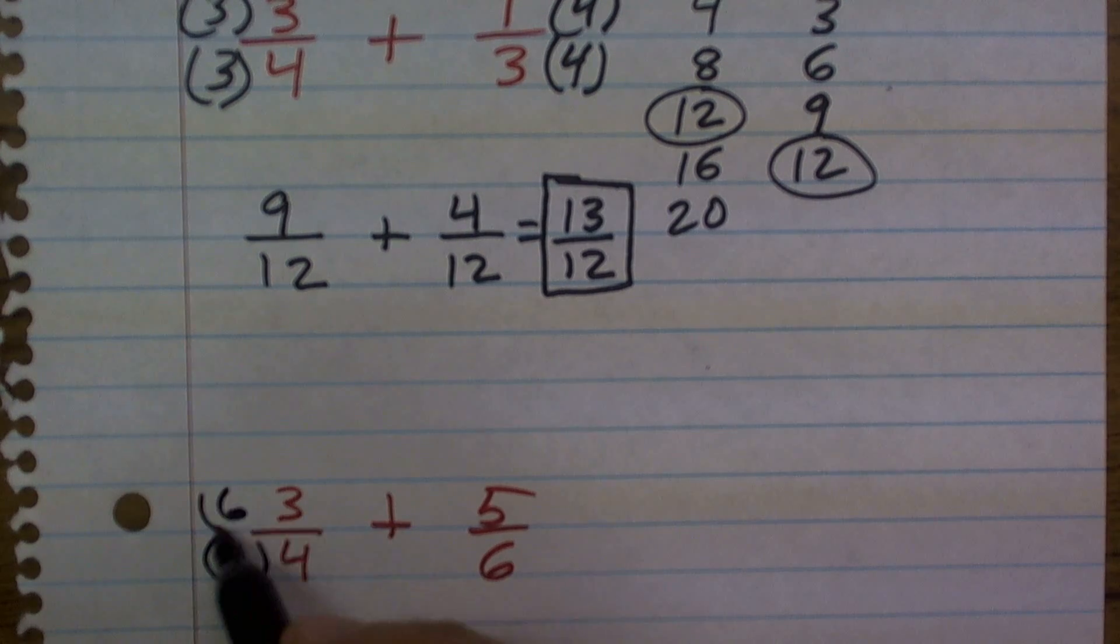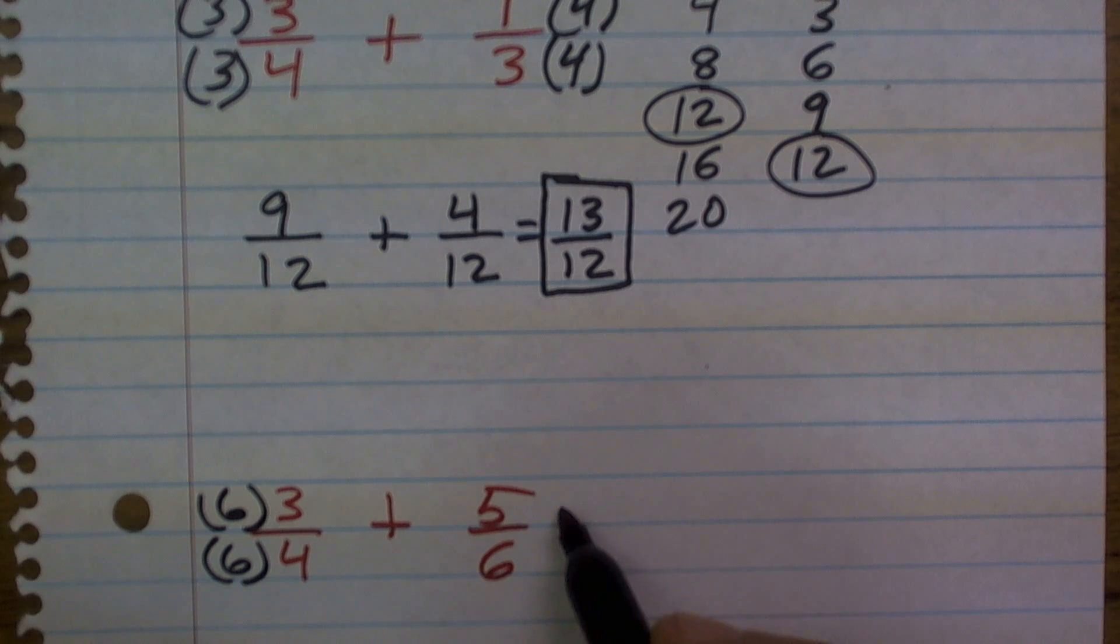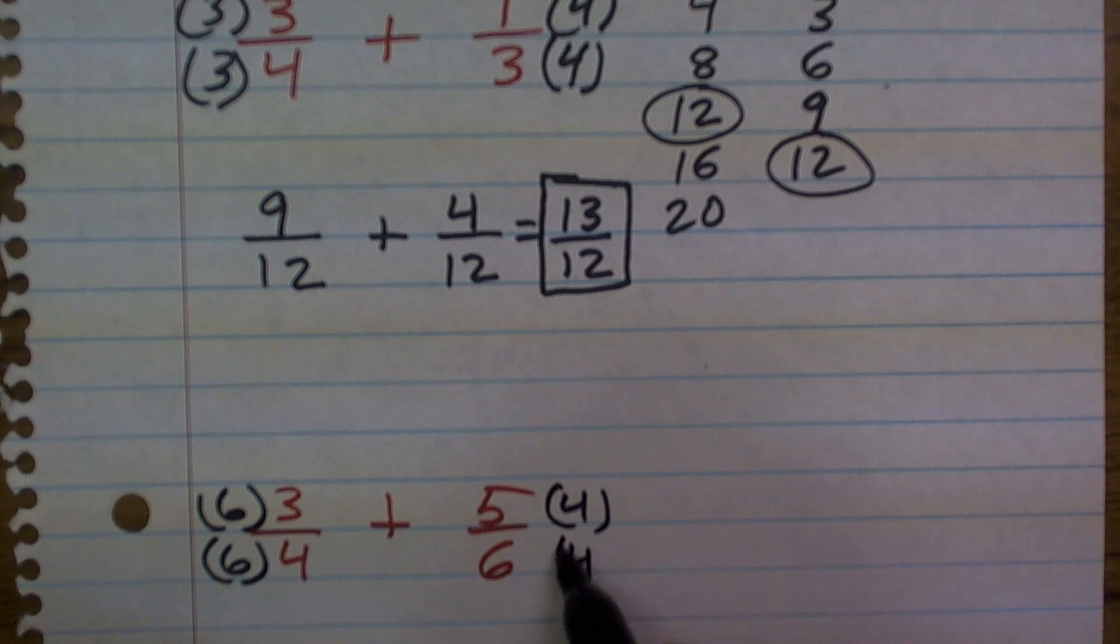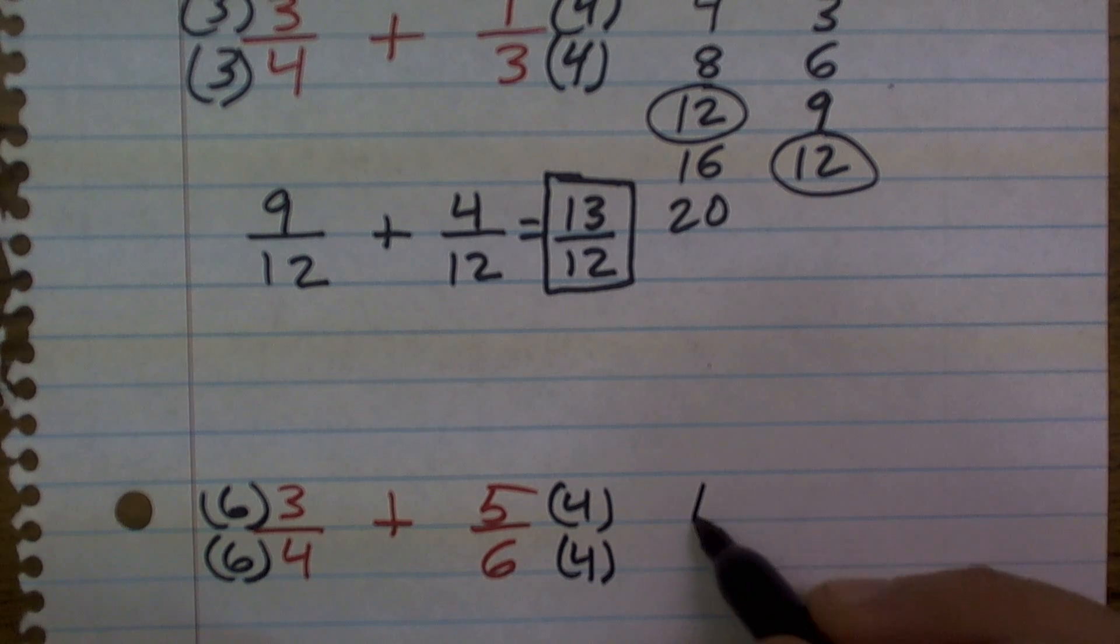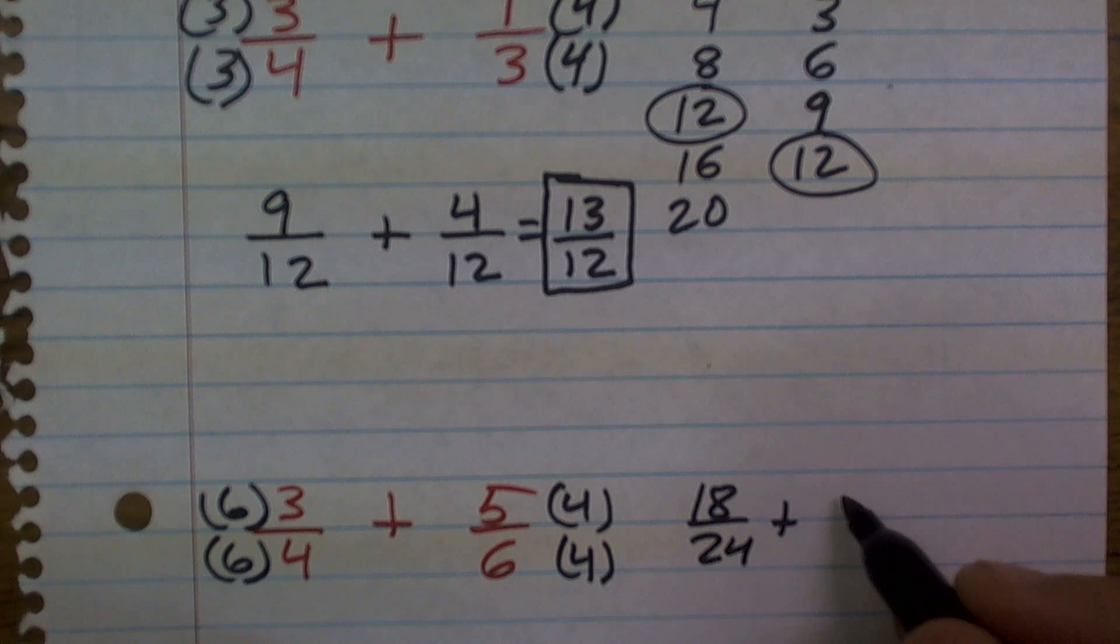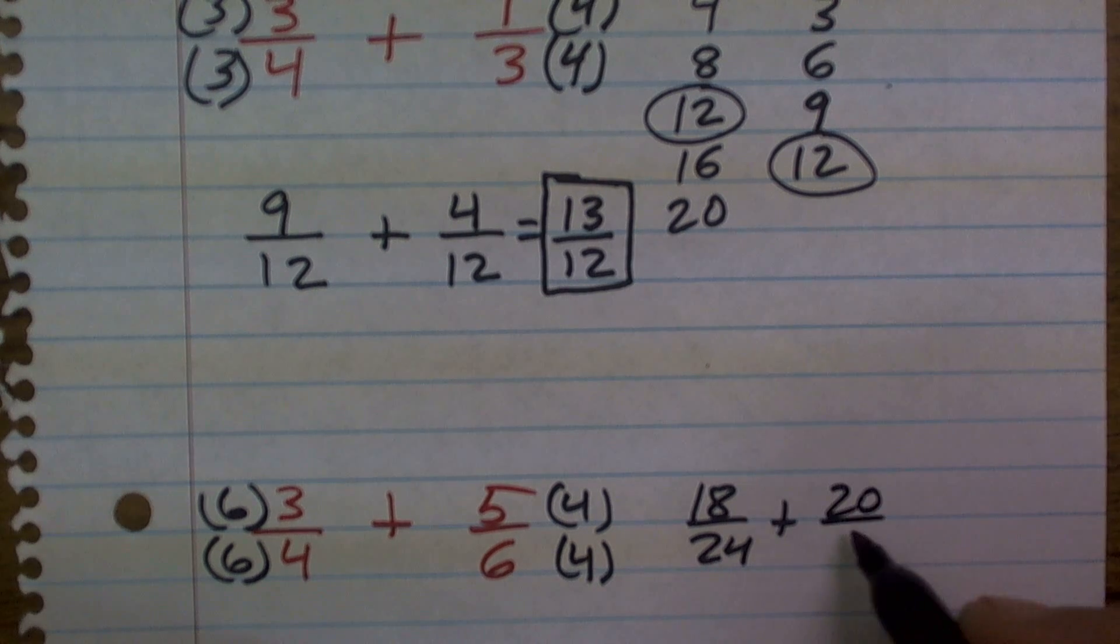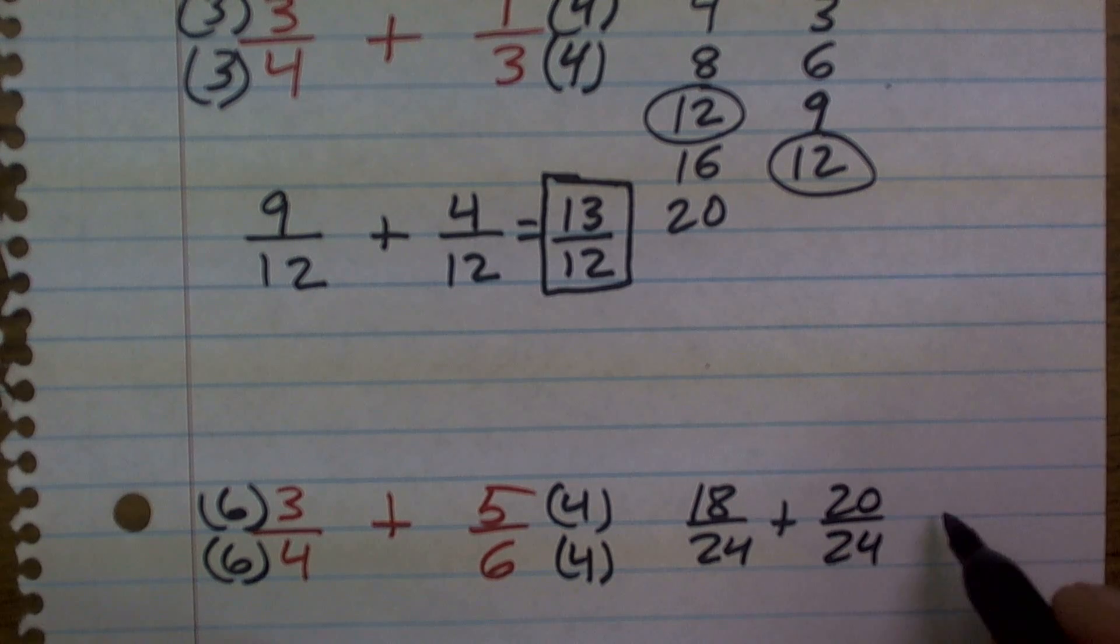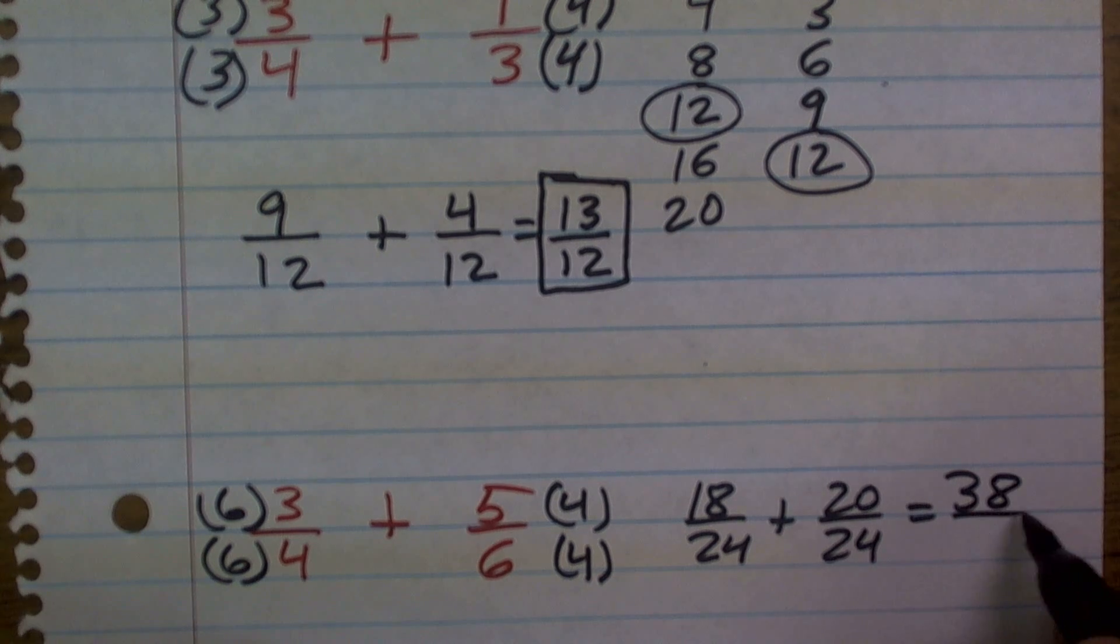So I'll multiply this by 6 over 6. In this problem, I'll multiply by 4 over 4. And that kind of gets away of a lot of the guesswork that I'm going to have to do. So therefore, I'll be left with 18 over 24 plus 5 times 4 is 20 over 24. Add those two up, I get 38 over 24.